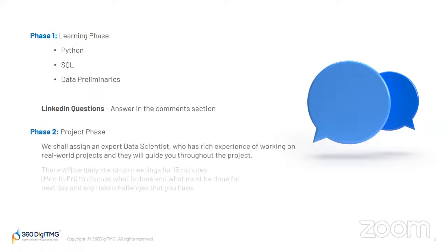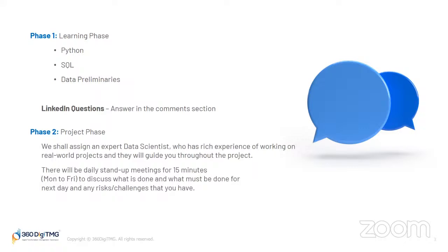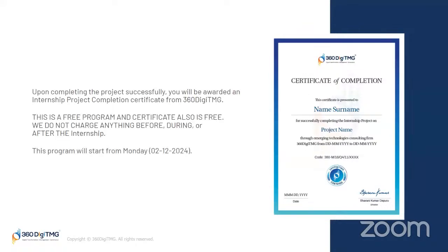Now let's talk about the second phase — the project phase. Here we shall assign an expert data scientist who has rich experience working on real-world projects, and they will guide you throughout the project. There will be daily stand-up meetings for 15 minutes, Monday to Friday, to discuss what has been done, what must be done the next day, and any risks or challenges you face. We shall discuss this phase in detail when you actually reach it.